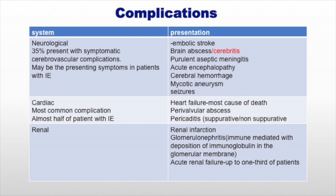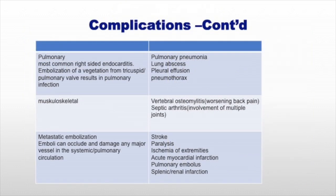If you have a patient with neurological deficits, stroke, and fever, and one of the risk factors, that should give you a high suspicion of infective endocarditis. On cardiac complications, the patient can have features of heart failure. On renal complications, they can present with renal failure due to immunomediated glomerulonephritis from ongoing deposition of immunoglobulin in the glomerular membrane. They can also have pulmonary presentations including lung abscess, pleural abscess, pleural effusion, and pneumothorax.